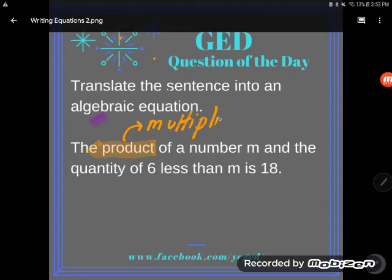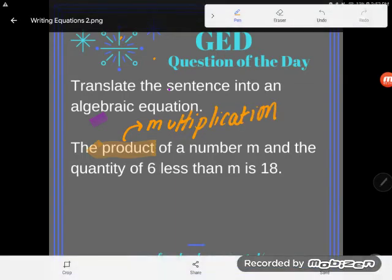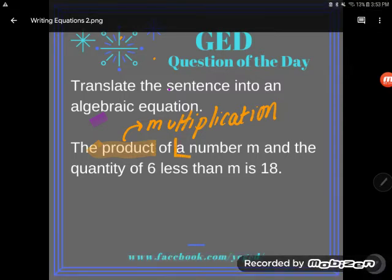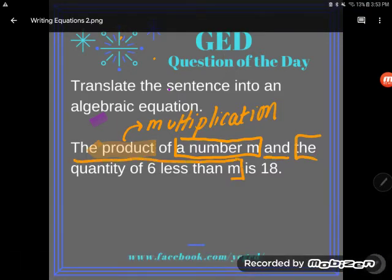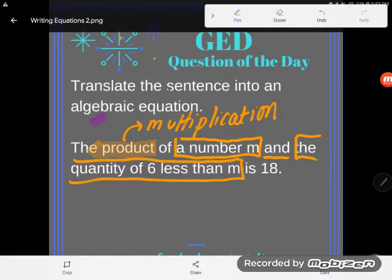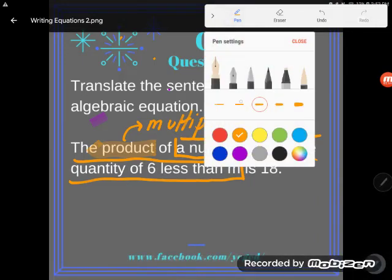Now it'll tell us what to multiply. It's going to say the product of something and something. Whenever you say product, you're going to have things multiplying. So take a look: it's the product of a number m and the quantity of six less than m. So there are the two things multiplying: a number m, and the second thing is the quantity of six less than m. This is a complex multiplication expression.